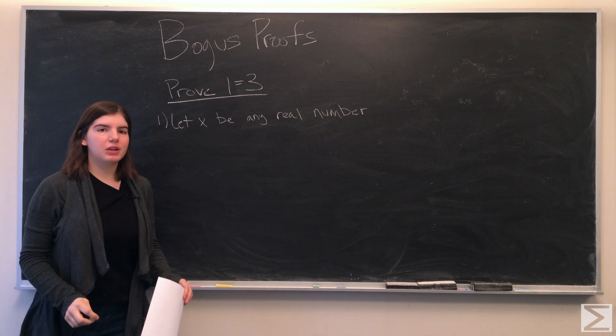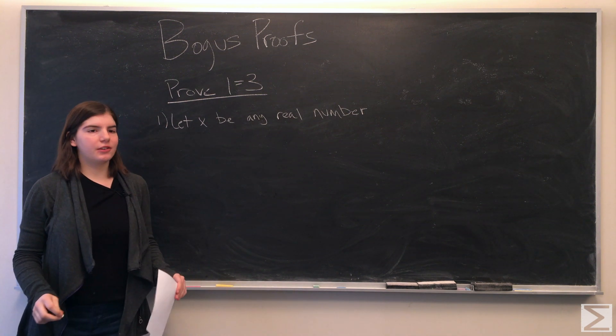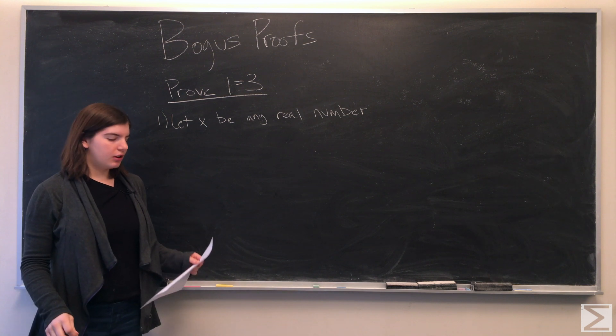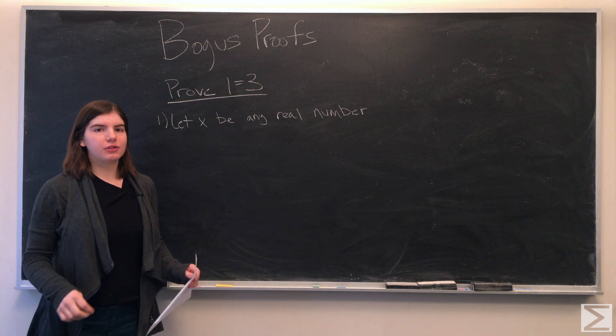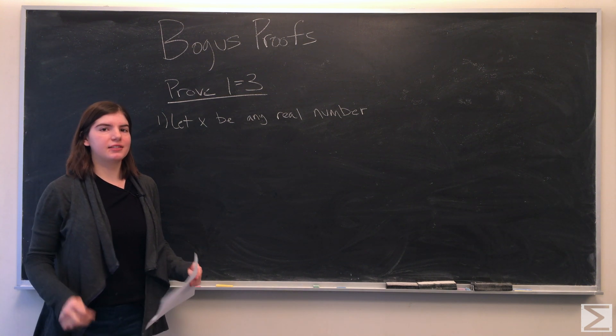We're going to let x be any real number, and Euler's formula tells us that if x is a real number, then e to the ix is equal to the cosine of x plus i sine of x.